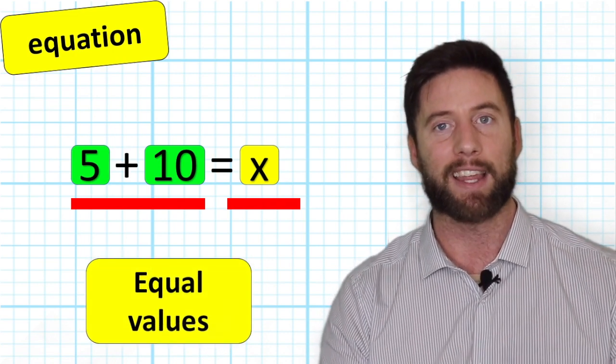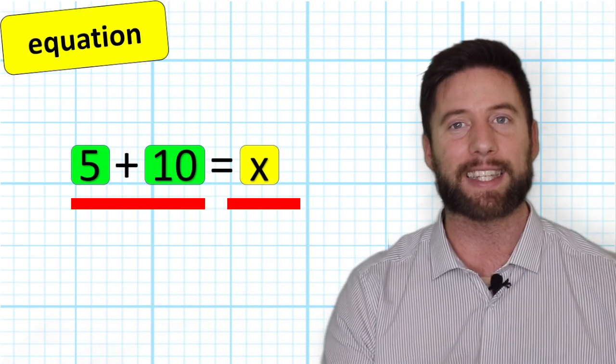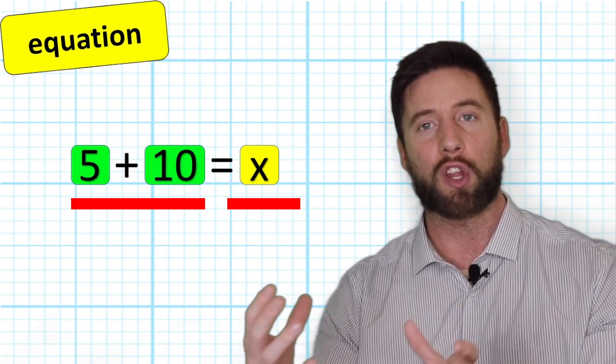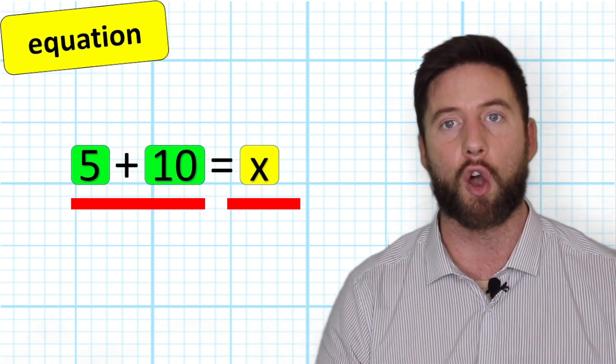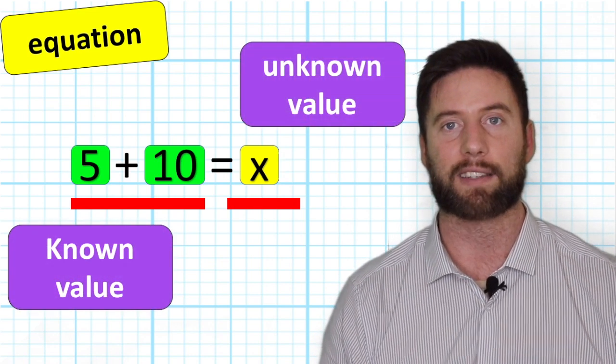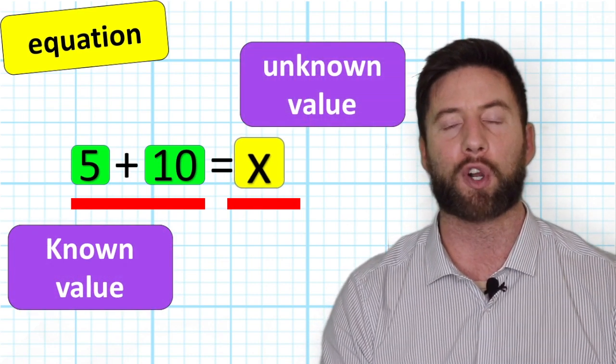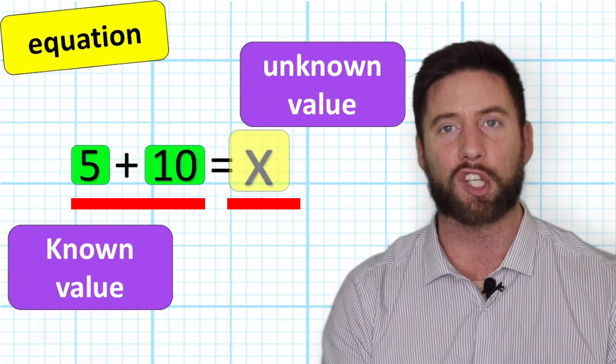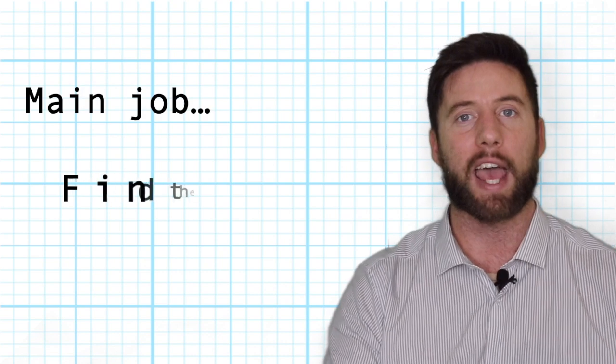In this example, the equation is telling us that what's on this side, 5 + 10, the known value, has the same value as what's on this side, which is the unknown value that we are going to call X. One of the main aims in algebra is to solve equations, finding out the unknown value. In this case, X.